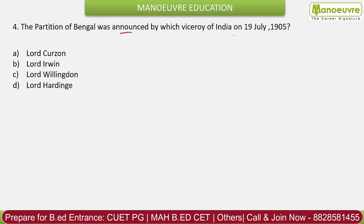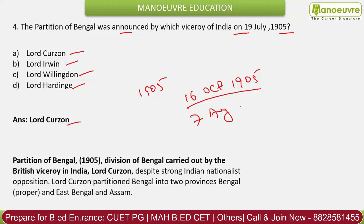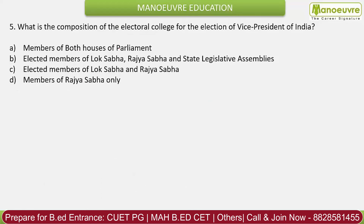Question 4: The Partition of Bengal was announced by which Viceroy of India on 19 July 1905? Options: Lord Curzon, Lord Irwin, Lord Wellington, Lord Hardinge. The correct answer is Lord Curzon. The Partition of Bengal was announced in 1905 and implemented on 16 October 1905. Against this partition, the Swadeshi Movement was started on 7 August 1905, which is why we celebrate Swadeshi Divas on that date.